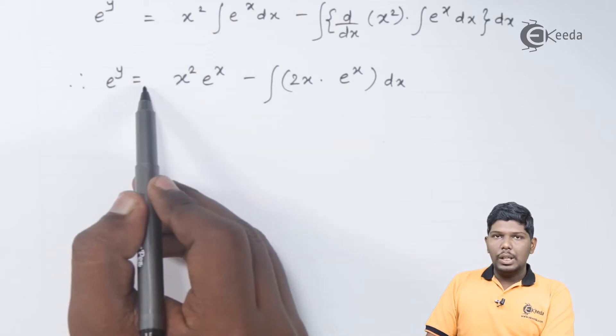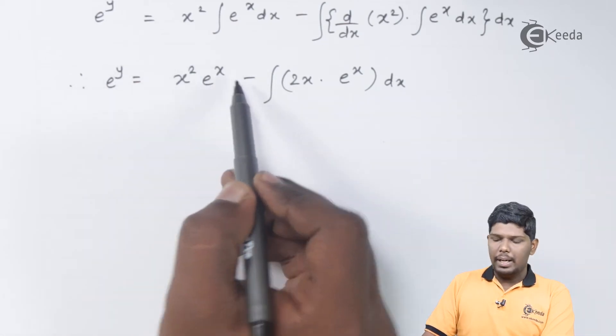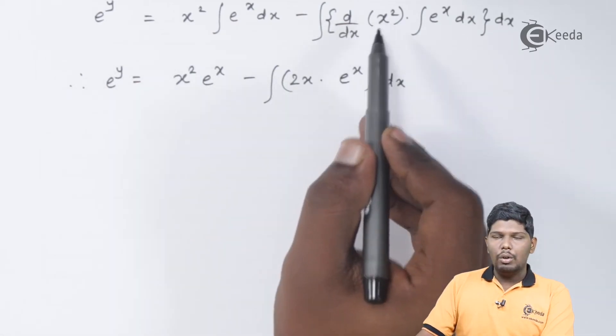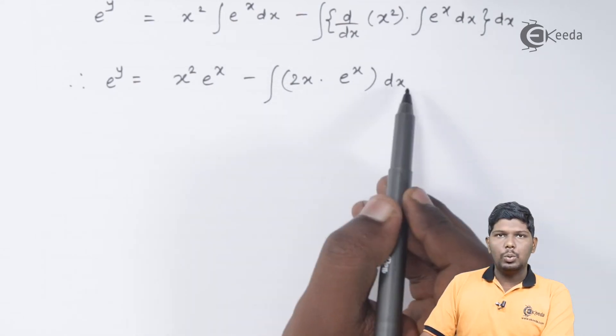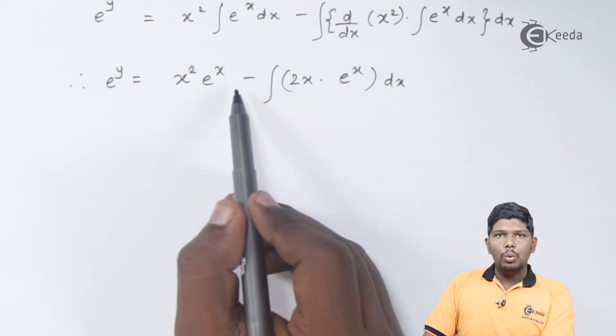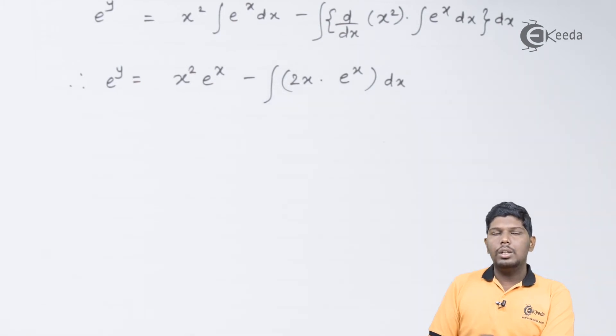In the next step, we have e raised to y is equal to x squared e raised to x minus integral of, derivative of x squared will be 2x, integral of e raised to x is e raised to x dx. Again, taking 2 outside, we will solve this integral using uv.